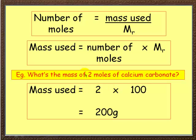So mass used is 2, there's the 2, 2, 2, 2, number of moles, times 100, which is the relative formula mass of calcium carbonate. 2 times 100 is 200 grams.